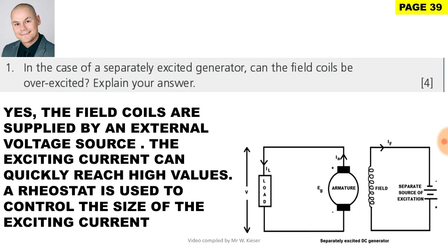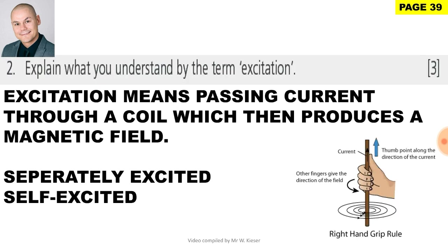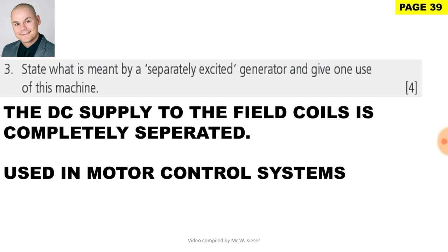In the case of a separately excited generator, can the field coils be overexcited? Yes — the field coils are supplied by an external voltage source, so exciting current can quickly reach high values. A rheostat or variable resistor is used to control the exciting current. Question 2: Excitation means passing current through a coil which produces a magnetic field, such as in separately excited and self-excited machines. A separately excited generator has the DC supply to the field coils completely separated, and is used in motor control systems.